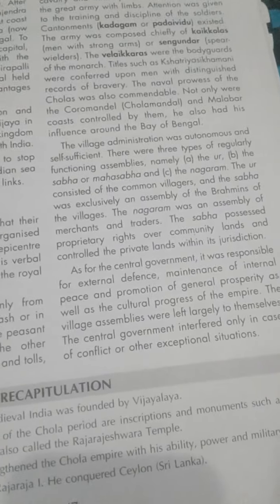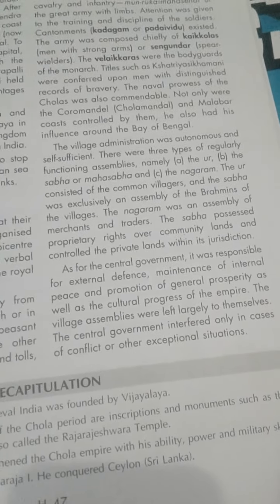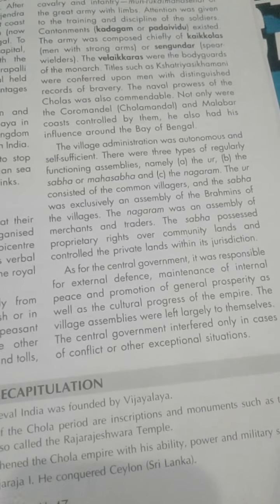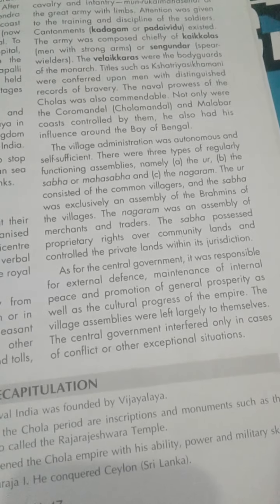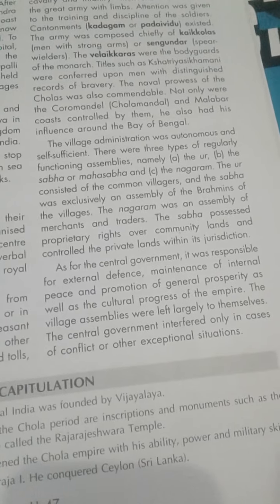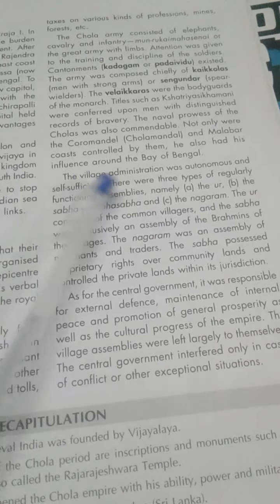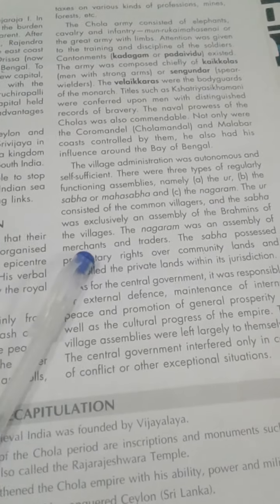The Cholas took control over the Coromandel coast and Malabar coast, and also had influence around the Bay of Bengal. The village administration was autonomous and self-sufficient. There were three types of village assemblies: first, the Ur; second, the Sabha or Mahasabha; and third, the Nagaram. The Ur assembly was for common villages, the Sabha was for Brahmin villages, and the Nagaram was the assembly of merchants and traders.